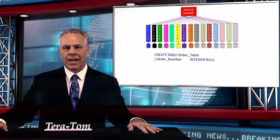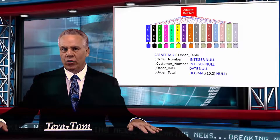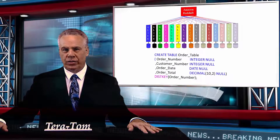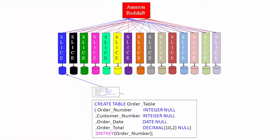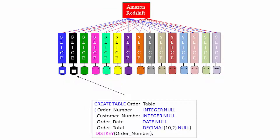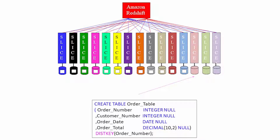When you create a table on Amazon Redshift, the table structure goes to every single slice — whether there are 20 slices in the entire system or there are a thousand. So everybody has the same table structure.